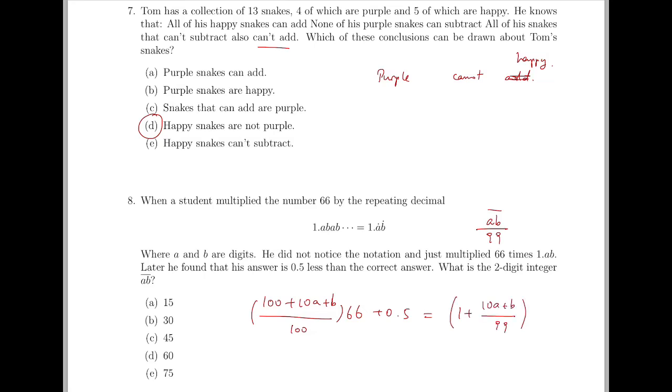We can rewrite that as 10A plus B over 99, and use this number to multiply by 66 instead. To solve this equation, we have 0.5 equals 66, times 10A plus B, times 1 over 99, minus 1 over 100. And so solving, 10A plus B equals to 75. So the answer is E.